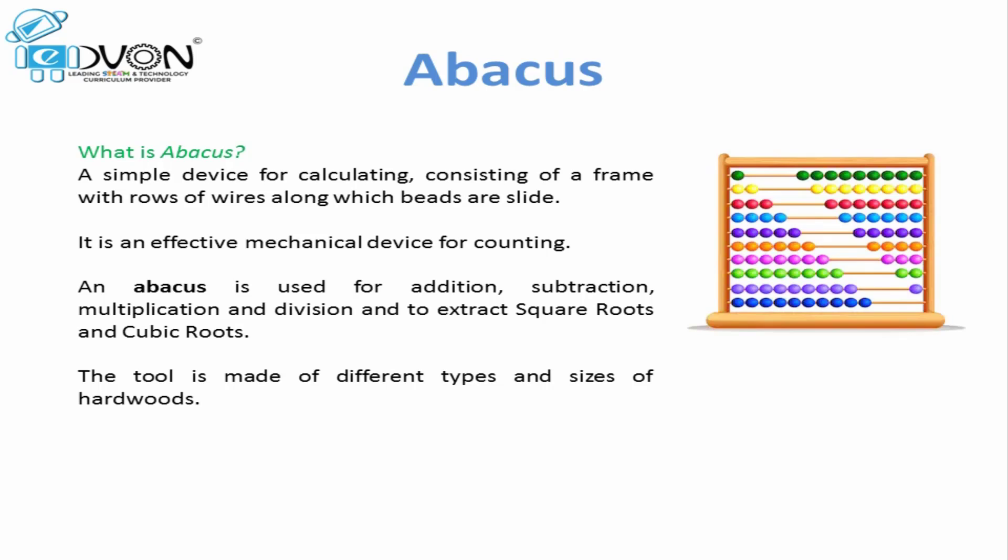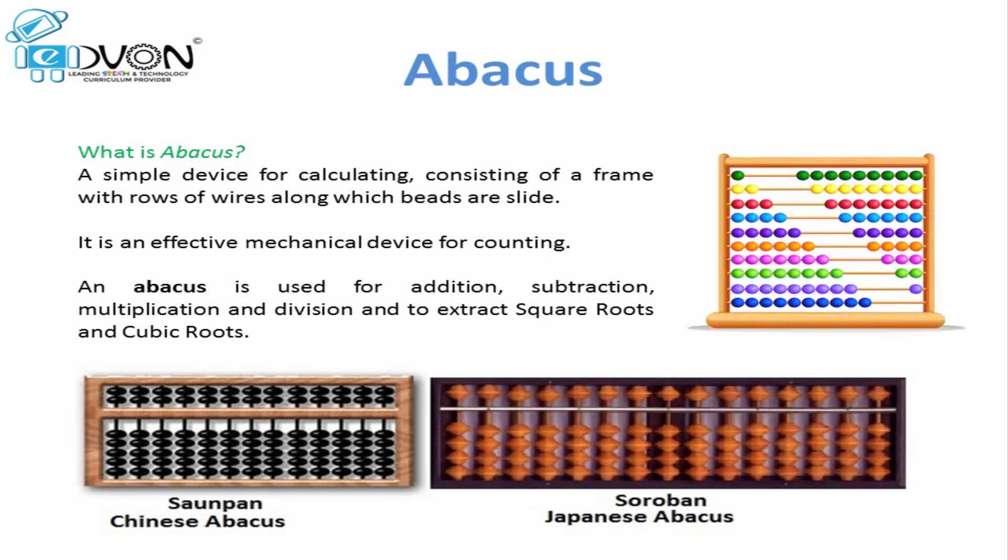Abacus is like a manual calculator that has beads which represent numbers. Now you will see pictures of two abacus on your screen. The first one is Chinese abacus and the second one is Japanese abacus. In Chinese abacus we have two upper beads and five lower beads, and in Japanese abacus we have one upper bead and four lower beads. We will be using Japanese abacus throughout our course.